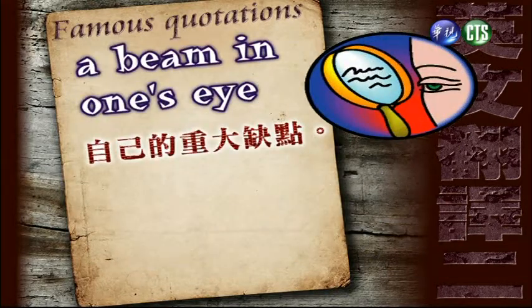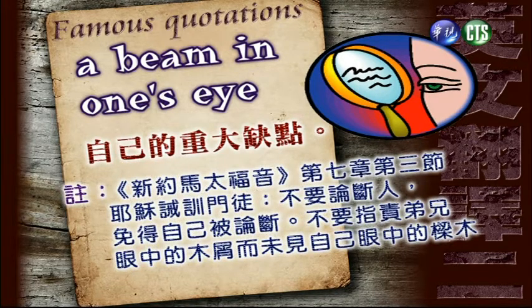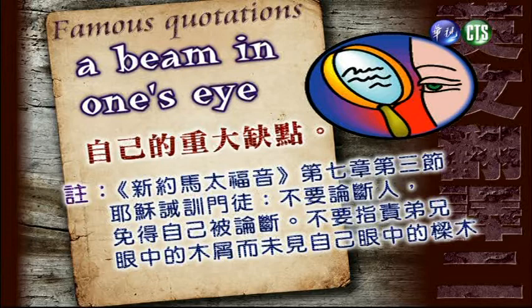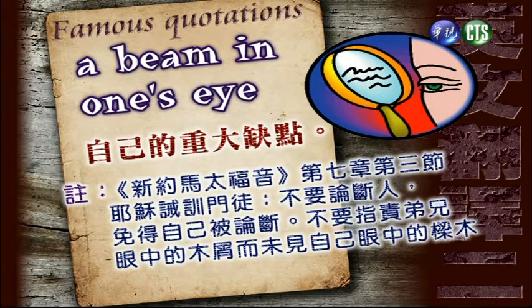A beam in one's eye. 自己重大的缺点。那这来源是哪里呢？新约马太福音第七章第三节。耶稣训诫门徒不要论断人，免得自己被论断。不要指责弟兄眼中的木屑，而未见自己眼中的梁木。Beams，梁木很大的柱子。这是我们的中外名言，我们也用了这个解释补足的翻译方法。